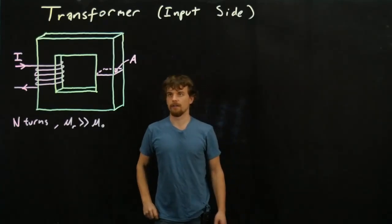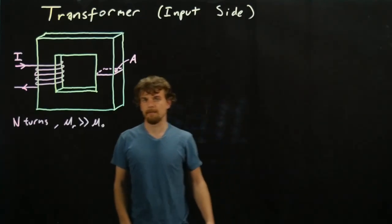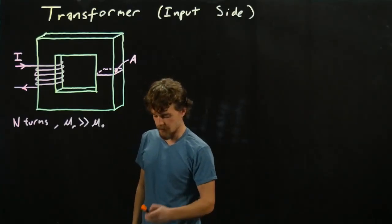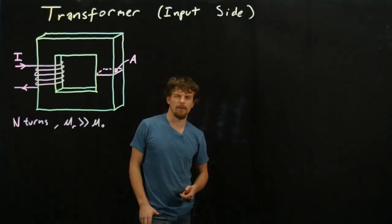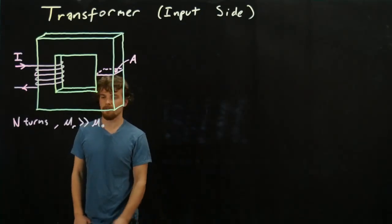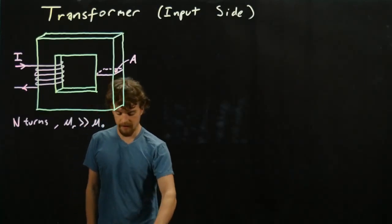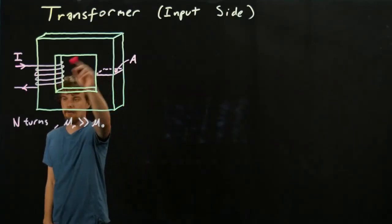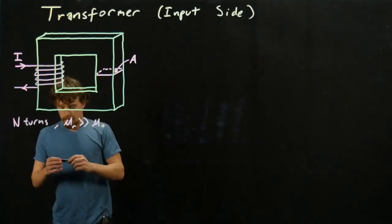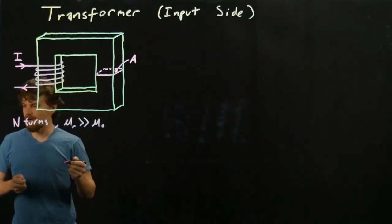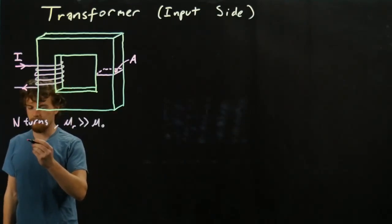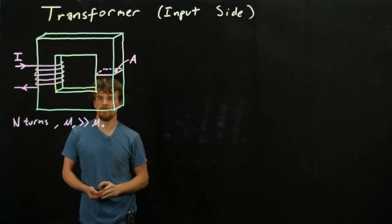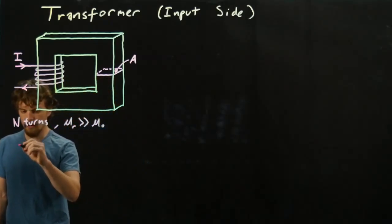Today we're going to deal with the input side of this transformer; next week we'll deal with the output and see how they relate to each other. For this side of the transformer we'll use one of Maxwell's equations that we went over previously, and we're going to try to find the magnetic flux in the core. We'll use Ampere's law — or part of it — ignoring the displacement current term because that won't come into play here.